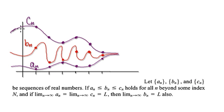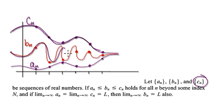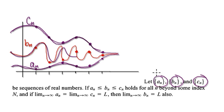So the top line here represents the sequence a_n, the red line represents b_n, and the bottom line represents c_n.